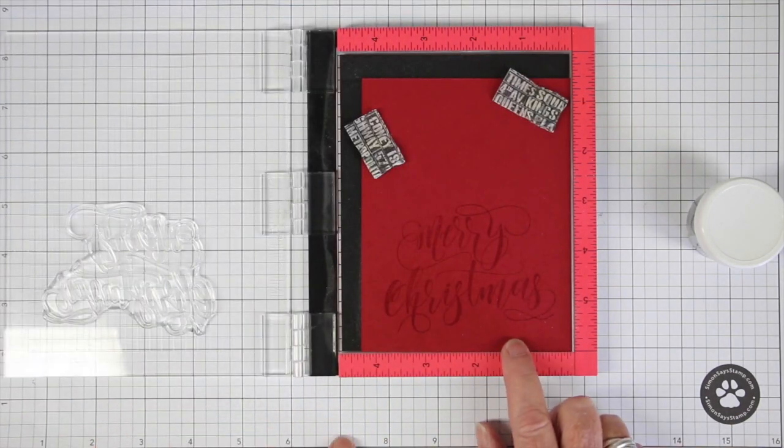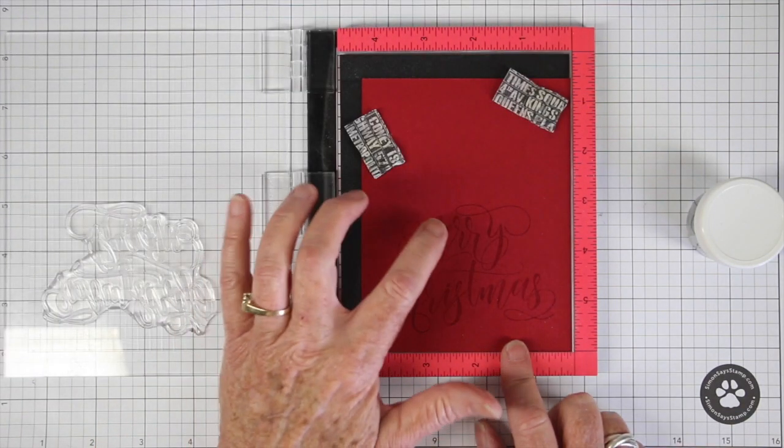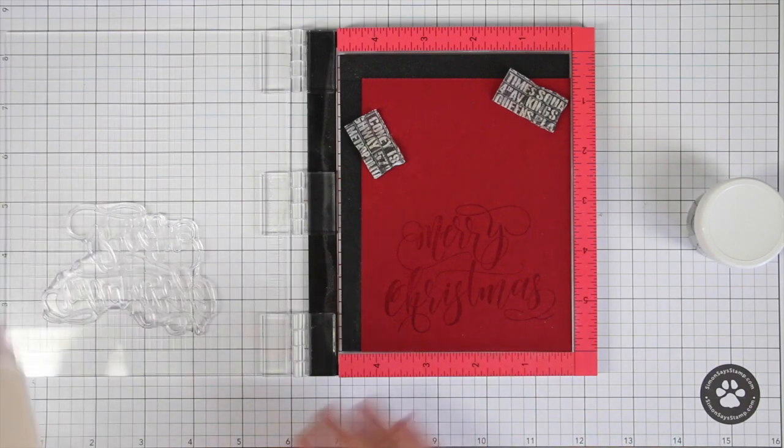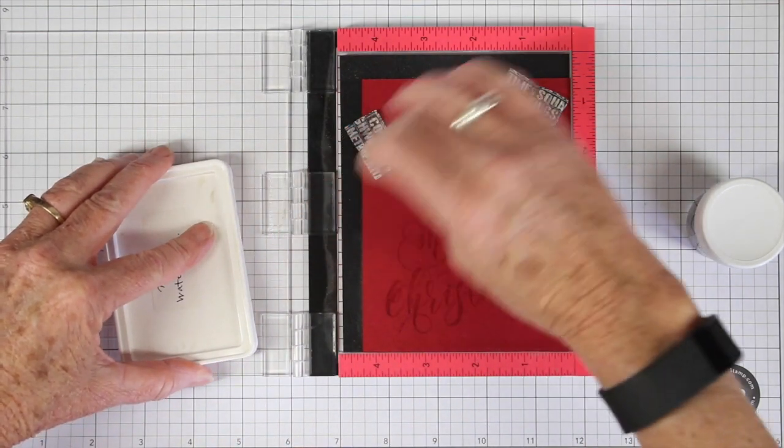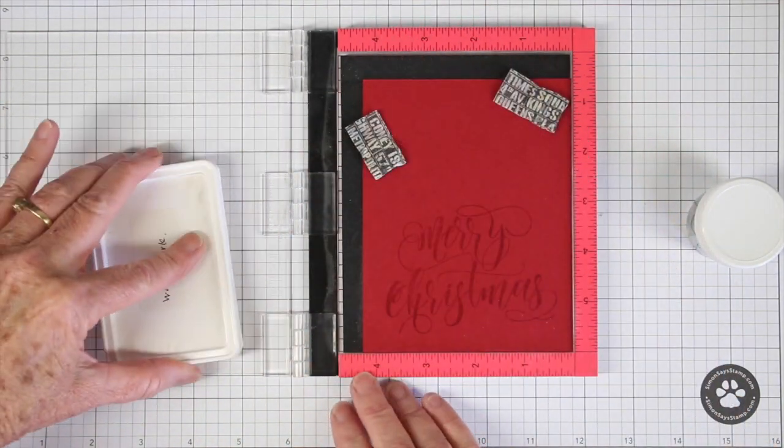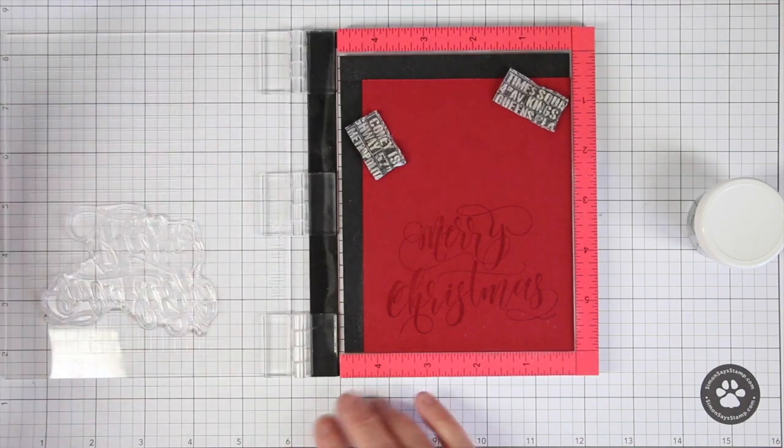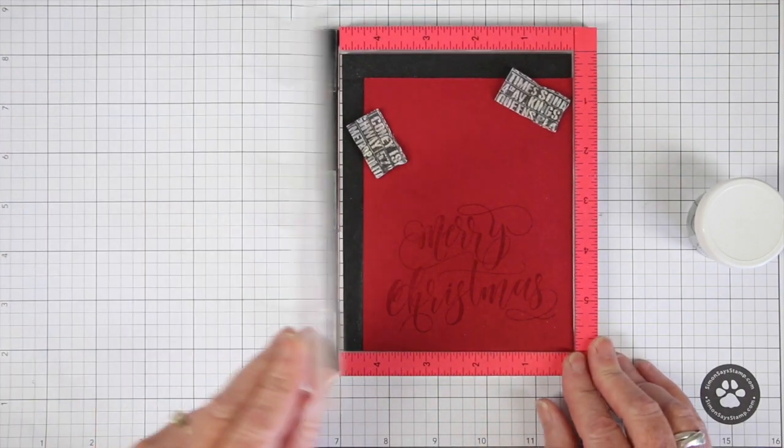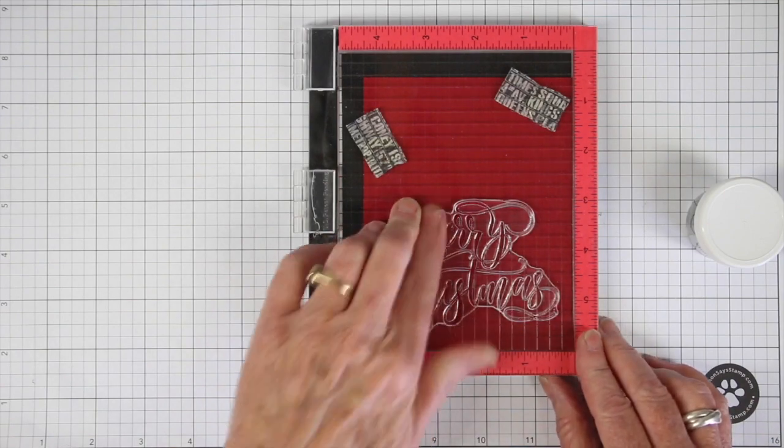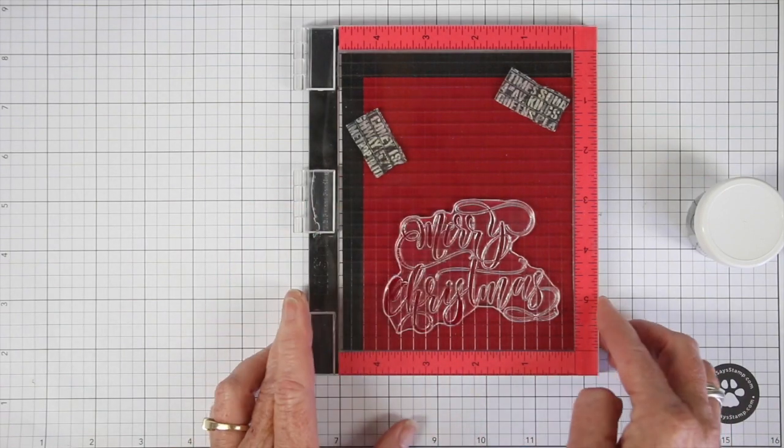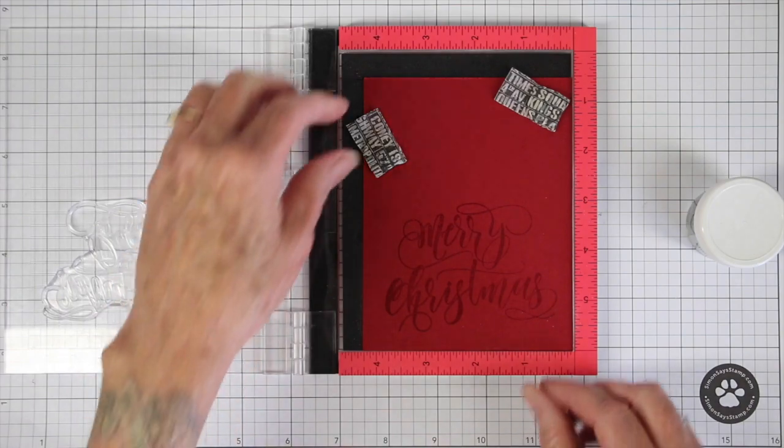When I open this up, you can see that I have my image because of the watermark that clear ink does, but I've missed one little area of my C and on the left side of the Merry. So I just added a little bit more ink and now I can press that down again because this is a stamp positioner, and now I have a perfect image.